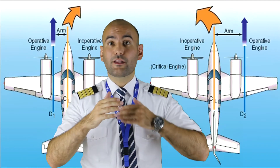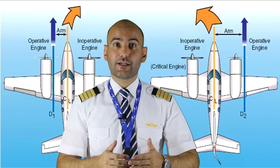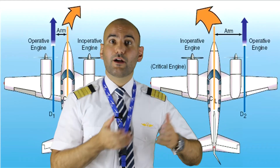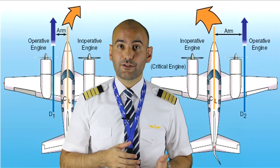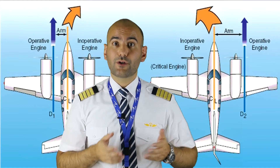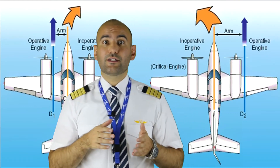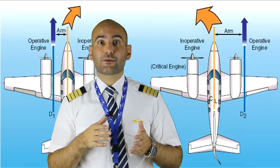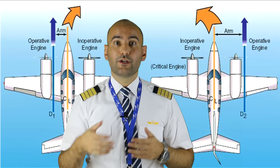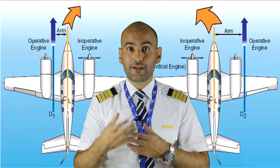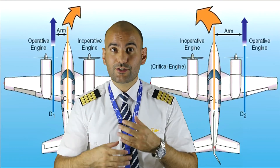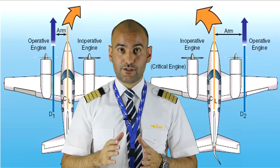In other scenarios, such as an aircraft with counter-clockwise turning engines, the right engine is the critical engine. So the critical engine depends on the rotation direction of the engines.